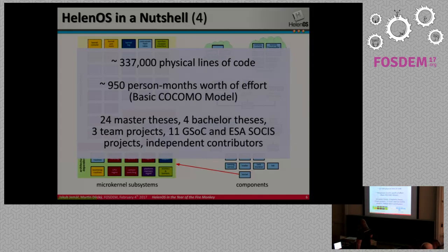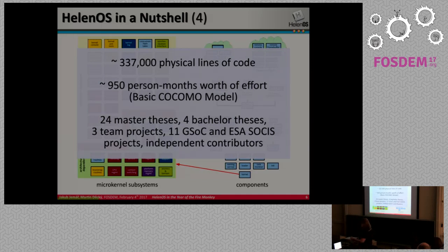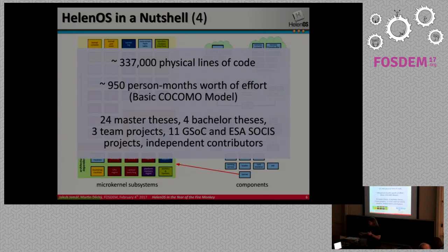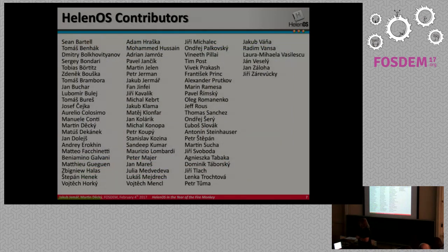In total, this gives a rough estimate of the codebase size and work effort. The COCOMO model isn't really suited for system software, but it gives some idea. Besides six to eight core developers, HelenOS has been developed through some 24 master theses, four bachelor theses, 11 Google Summer of Code projects, and more. We are eternally thankful to all our contributors.